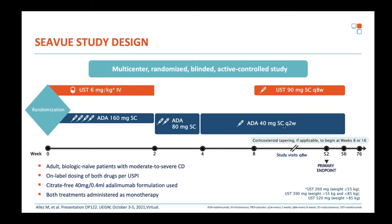There were dummy injections and infusions so that the patient didn't know whether they were receiving ustekinumab or adalimumab — a double-blind, treat-through design. Patients received the same drug all the way through to week 52, which was the primary endpoint of clinical remission. It was a superiority study, powered to show that ustekinumab was superior to adalimumab.